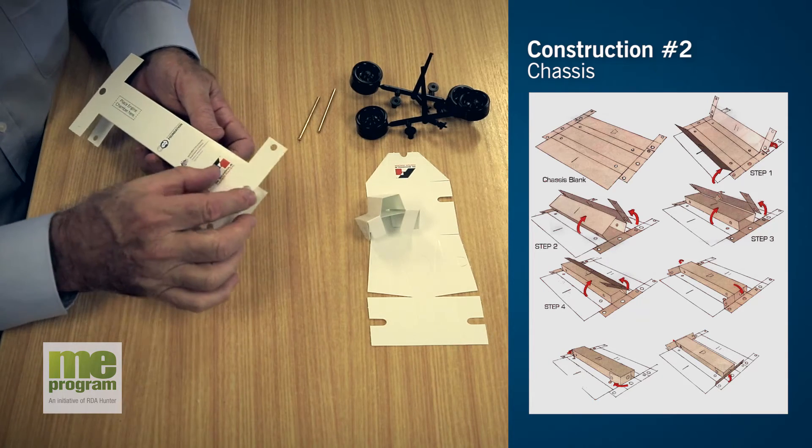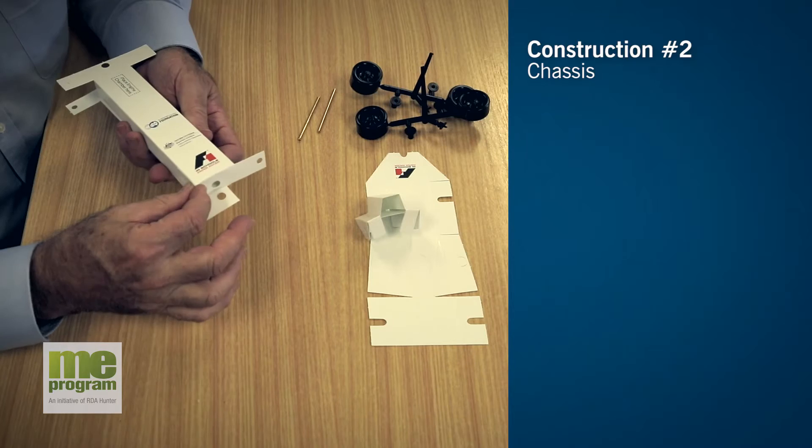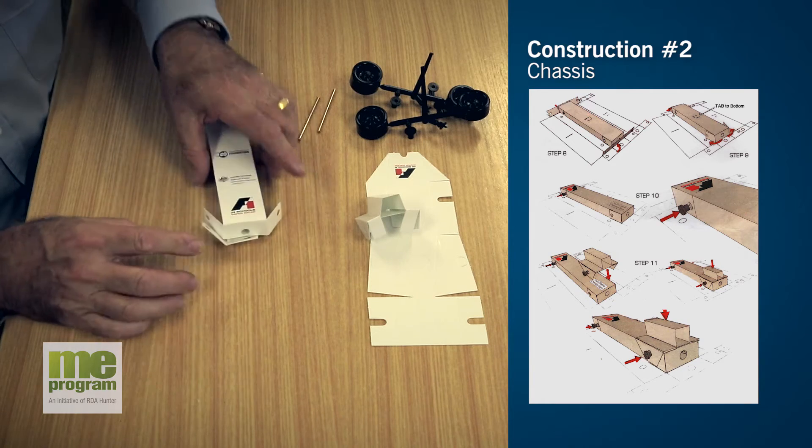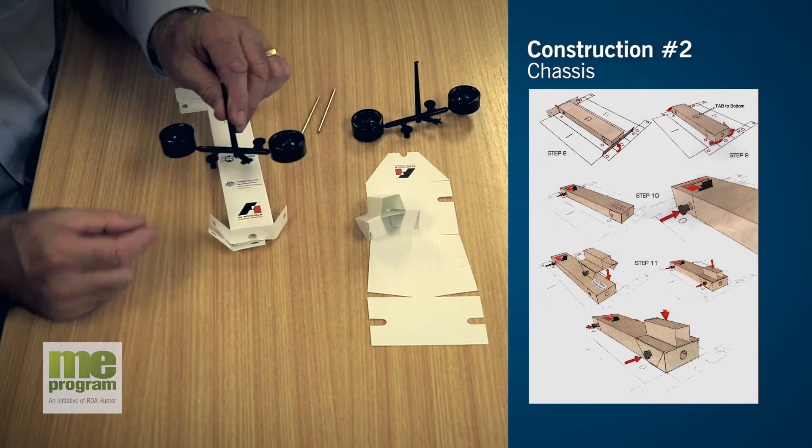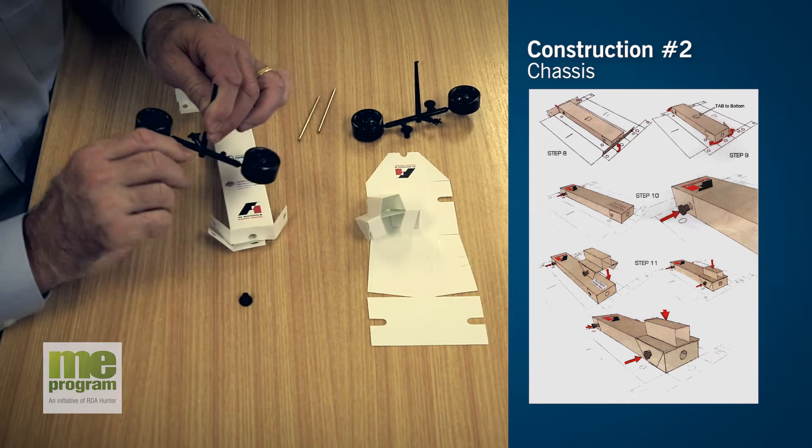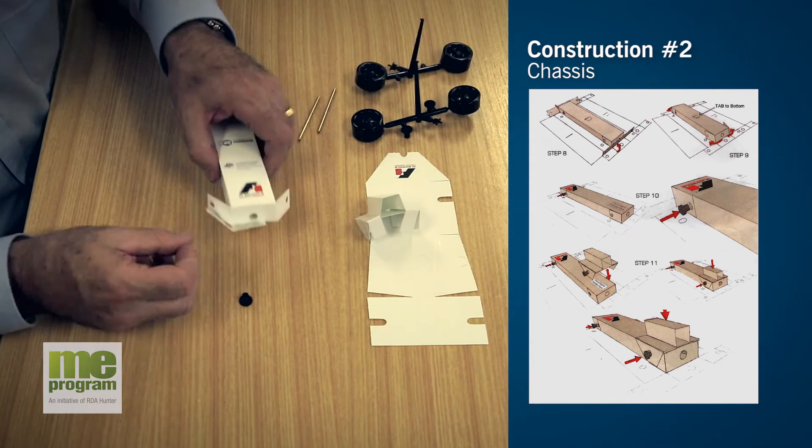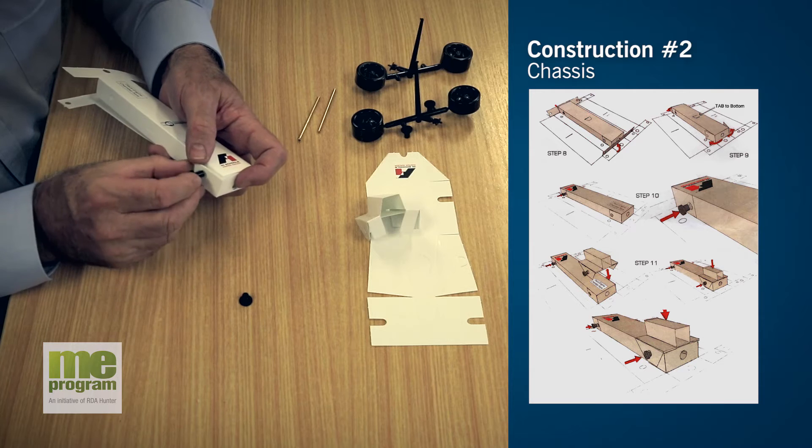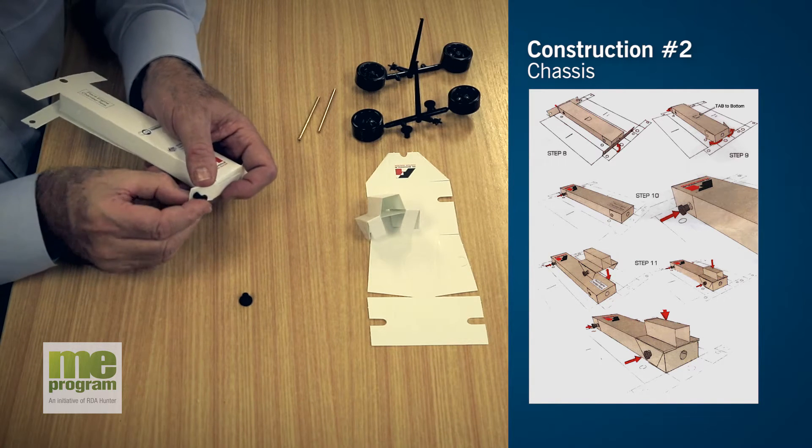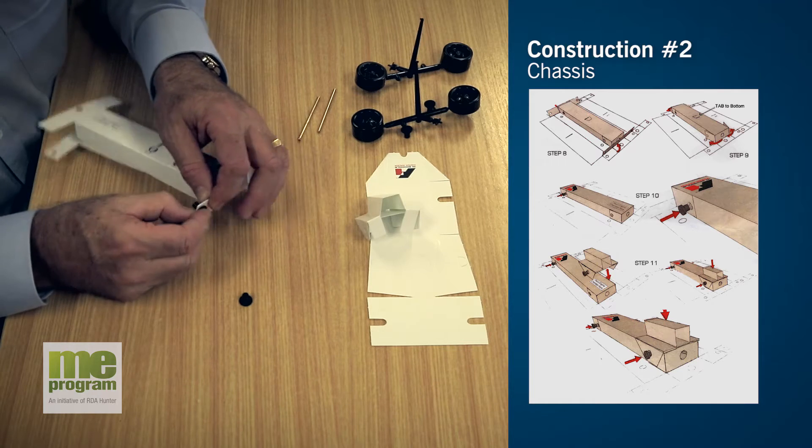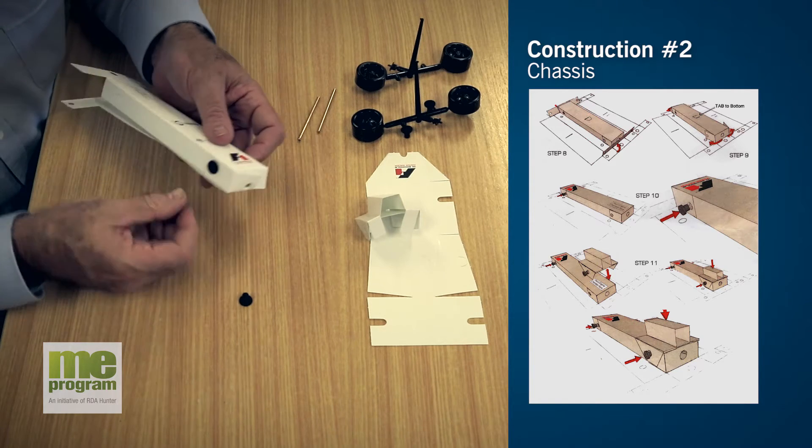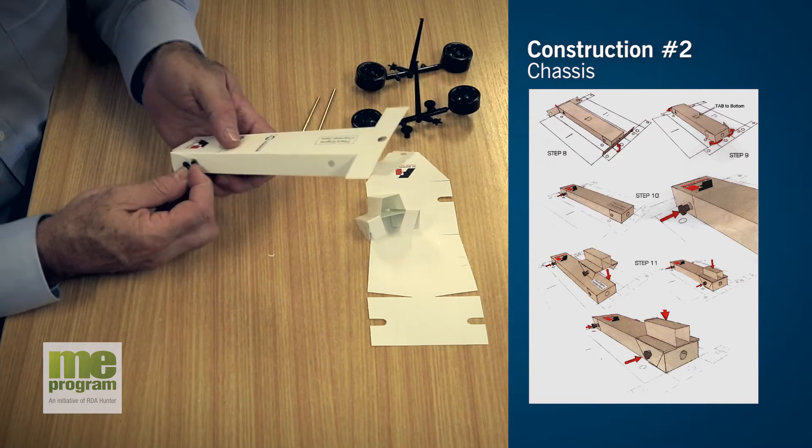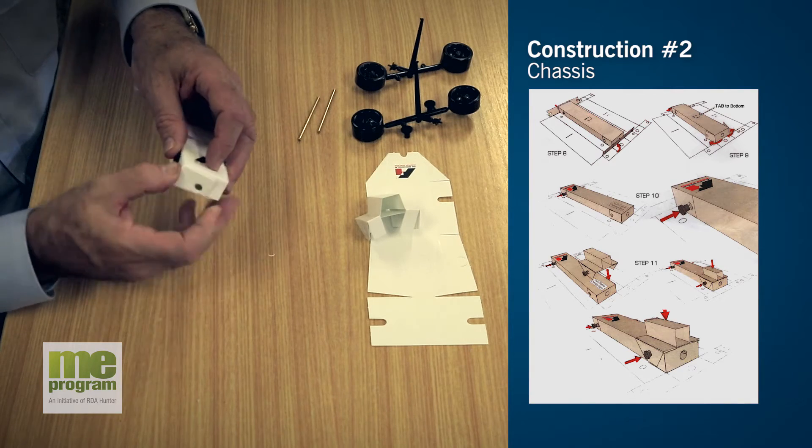If we start at what we call the front end of the car, this just folds over like a box. To make that stay together, we actually take our wheels. Here we have two bearings. We take those bearings and purely by clicking them into those holes and then into the body, we'll hold the front of the car in place. Same on the other side. So there's the front of the car made up ready to go.